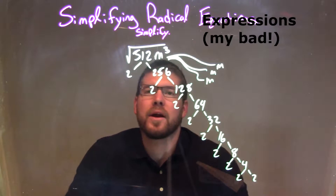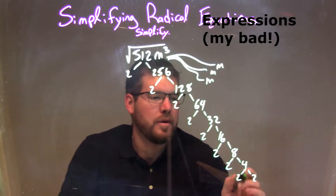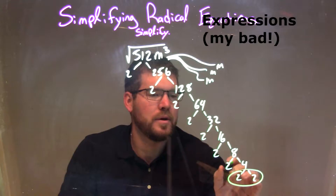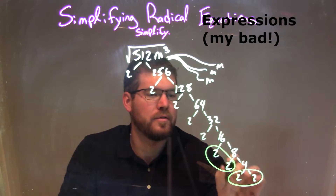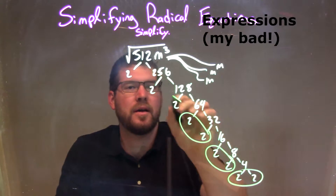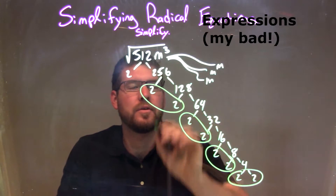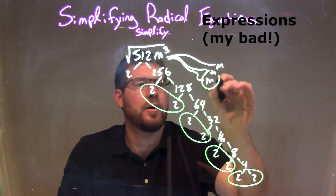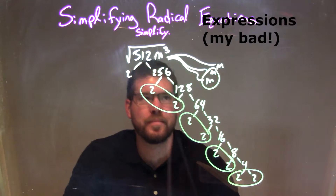Now we're going to grab our pairs. I'm going to circle a pair of 2s. So I have one pair of 2 here, two pairs of 2, three pairs of 2, and four pairs of 2. For the m's, I have one pair of m's.